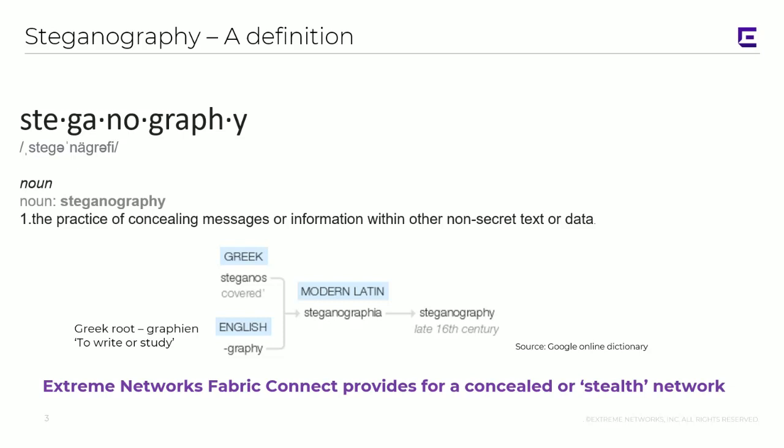As far as how this relates to stealth networking: we're taking a network that is obvious — you're attached to it, you can see it, it's an RJ45 you plug into, and the network service is quite obvious. However, the rest of the infrastructure is concealed. Let's talk about how we accomplish that, and how Xtreme Networks Fabric Connect provides the modern equivalent of a steganography-type implementation.